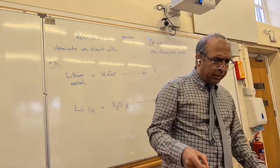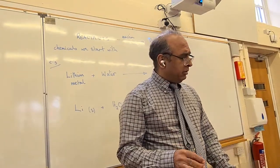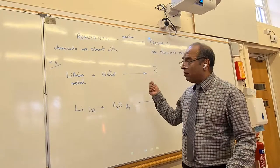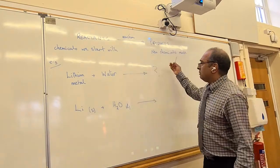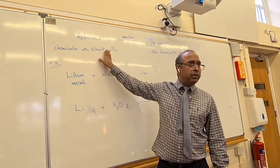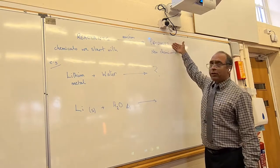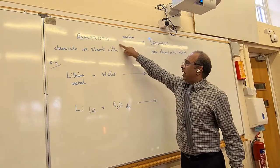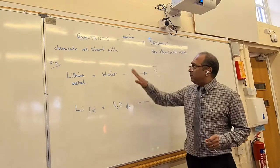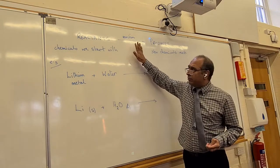This section covers the reactions of group one metals with water, which starts the topic on reactions. When we do reactions, we show them in the form of an equation. On the left we write the reactants — the chemicals we start with. On the right are the products — the chemicals we end up with. A big arrow separates the two and represents the reaction. Don't put an equals sign there — use a proper straight arrow.